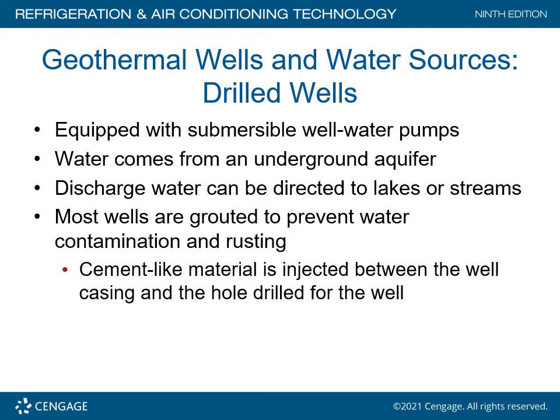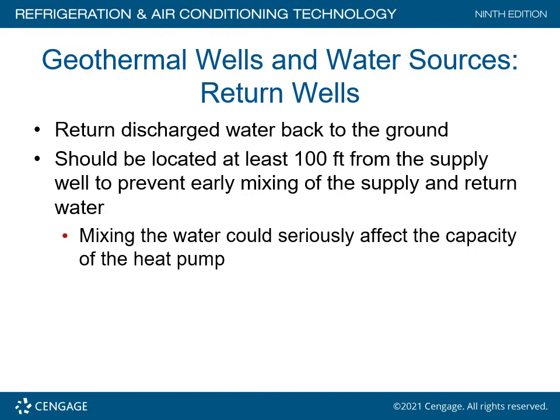Geothermal drilled wells are equipped with submersible water well pumps. Water comes from an underground aquifer, and discharge water can be directed into lakes or streams. Most wells are grouted to prevent water contamination, with cement-like material injected between the well casing and the drilled hull. The water from the aquifer is utilized for geothermal heat pumps.